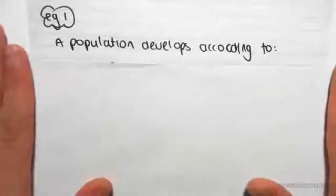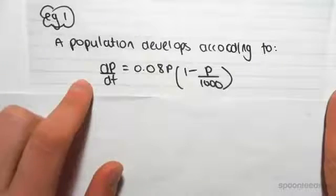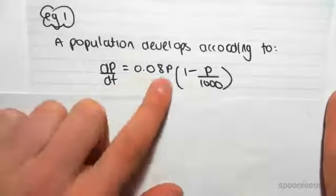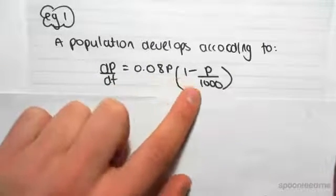A population develops according to dp/dt equals 0.08p times (1 minus p/1000).